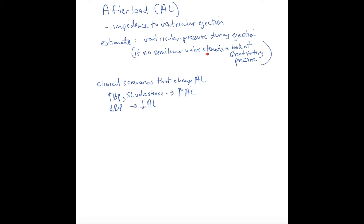Now there is a caveat here. If there's a semilunar valve stenosis, the left ventricle pressure and aortic pressure are vastly different. The left ventricle pressure is significantly higher than the aortic pressure, and we can't really say that they're so similar that we can just use the great artery pressure.